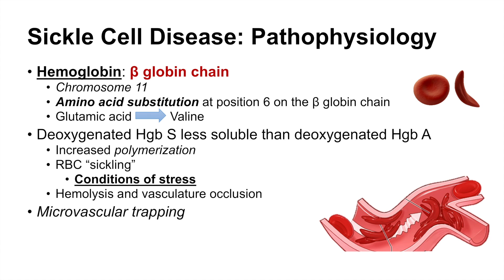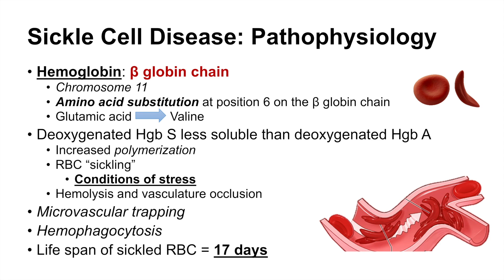This is something we call microvascular trapping. All of this leads to hemophagocytosis — white blood cells come in and essentially clean up a lot of these sickled red blood cells. This leads to a dramatically reduced lifespan of sickled red blood cells — about 17 days. A normal red blood cell lives for about 120 days, but a sickled red blood cell lives anywhere from 10 to 20 days, usually about 17 days. The red blood cells get clogged, especially in microvascular areas, leading to an inflammatory reaction where white blood cells phagocytize them.